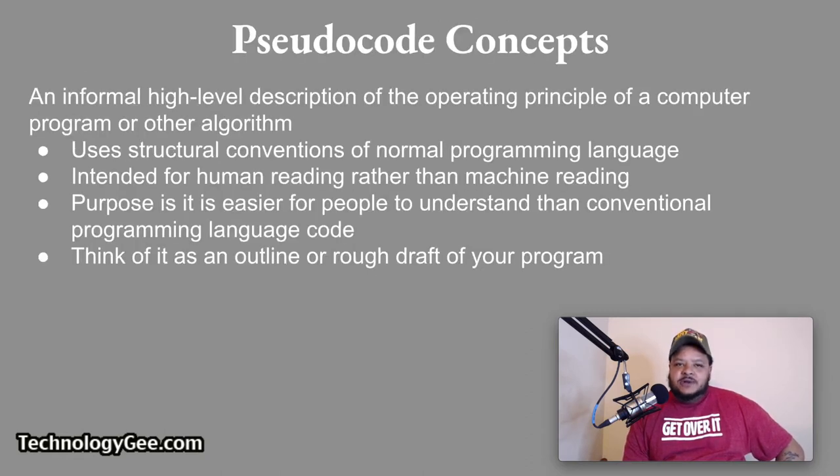Pseudocode. So pseudocode is an informal, high-level description of the operating principle of a computer program or other algorithm. It uses the structural conventions of a normal programming language, but is intended for human reading rather than machine learning. The purpose of using pseudocode is that it is easier for people to understand the conventional programming language code. Think of it as an outline or a rough draft for your program.